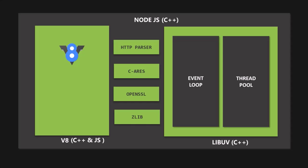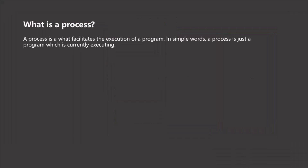Now let's understand the working of this architecture in more detail. Before that, let's first understand what a process, thread, and thread pool is. A process is what facilitates the execution of a program — in simple words, a process is just a program which is currently executing. For example, when we open up a calculator app on our computer, a process called calc.exe will be created for that calculator program to facilitate its execution. You can see this process in the task manager after the program has been opened.